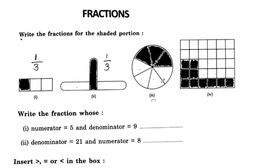7 total parts and 3 shaded, so the fraction is 3 by 7. Then counting: 1, 2, 3, 4, 5, 6 — total 6 parts, and 5 are shaded, so the fraction is 5 by 6. Total 30 parts and the shaded parts are 1, 2, 3, 4, 5, 6, 7, 8, 9, 10 — so the fraction is 10 by 30.